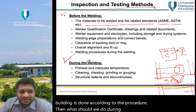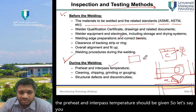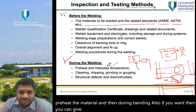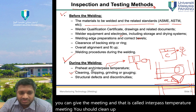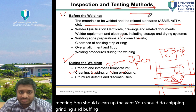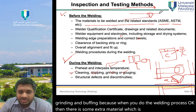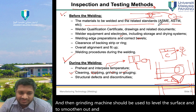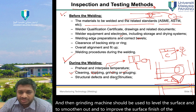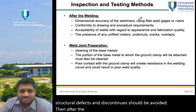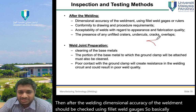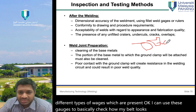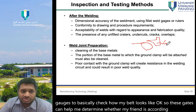During welding, preheat and interpass temperature should be maintained using a gas torch. You should clean the weld by chipping, grinding, and gouging to remove extra material and smooth the surface finish. Structural defects and discontinuities should be avoided. After welding, dimensional accuracy should be checked using fillet weld gauges.